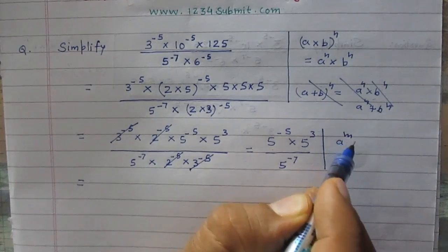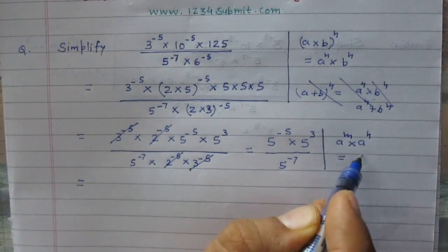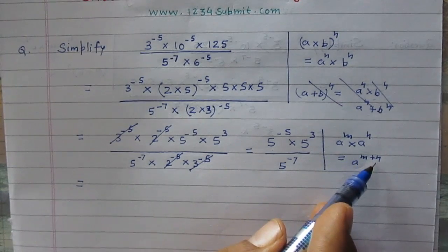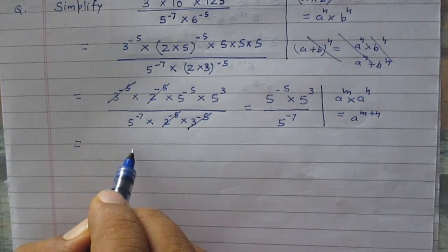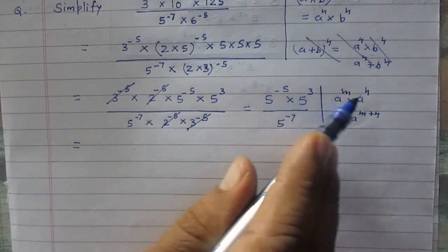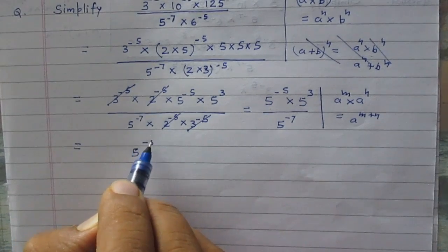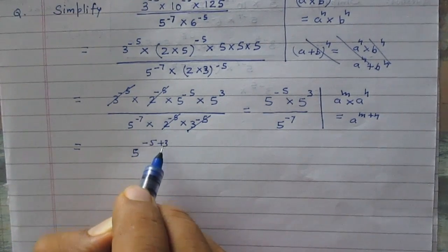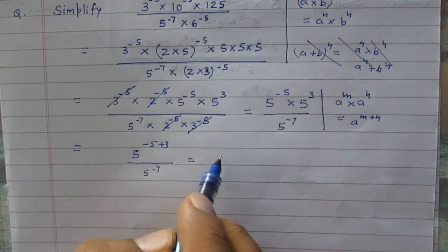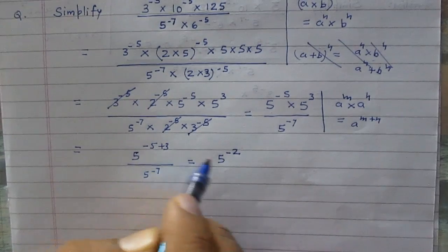We simplify the numerator using the identity: a raised to power m multiplied by a raised to power n equals a raised to power m plus n — when bases are the same, powers are added. Here a is 5, m is minus 5, and n is 3, so the numerator becomes 5 raised to power (minus 5 plus 3), which equals 5 raised to power minus 2, because minus 5 plus 3 is minus 2. The denominator remains 5 raised to power minus 7.